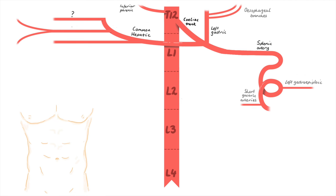From the common hepatic, we have three branches. One, the proper hepatic. Two, the gastroduodenal. And three, the right gastric. From the gastroduodenal, we have the right gastroepiploic and superior pancreaticoduodenal.